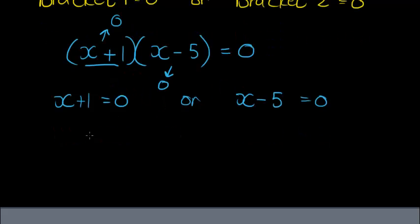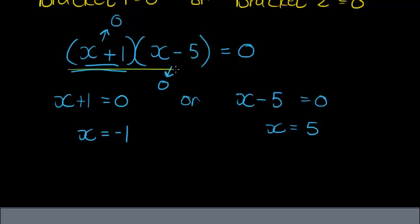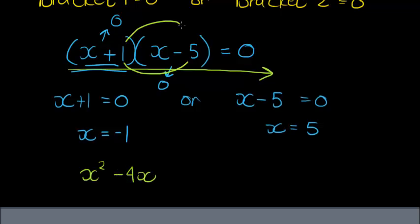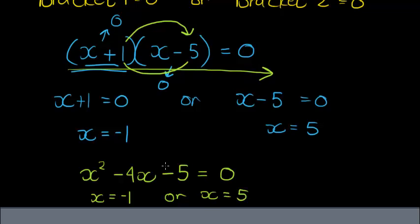So what do I get? I get that x can be equal to negative one, because negative one plus one will make this bracket zero, or x can be equal to five, because five minus five will make that bracket equal to zero. So there are two answers to this equation. If I multiply out the brackets, I get x squared minus 4x minus 5 equals zero.